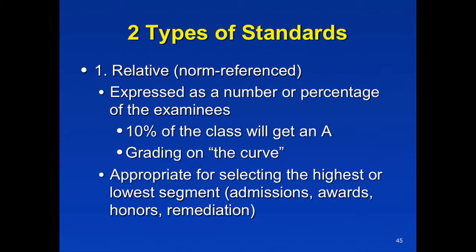Two types of standards. The relative standard is one that depends on how well the group does as a whole. So it's not looking at an absolute score — we're simply saying that the top 10% are going to get honors, commendation, or graduation with excellence.